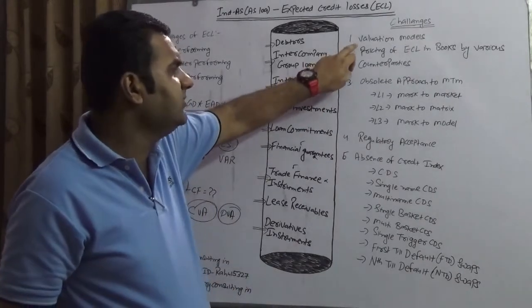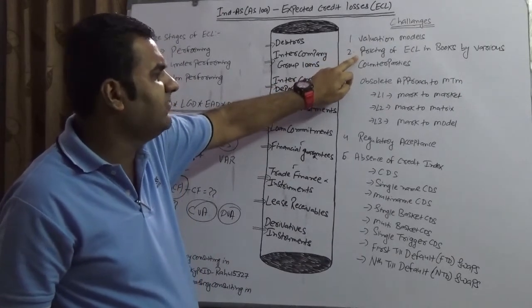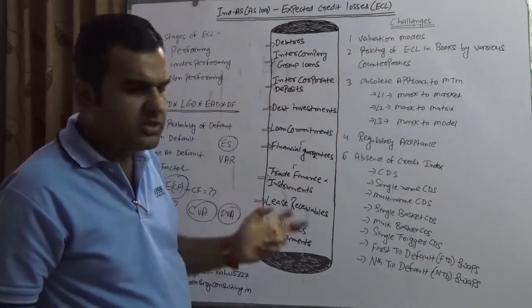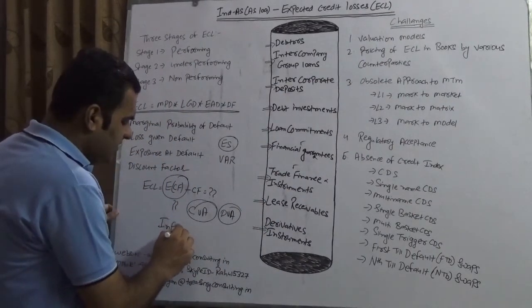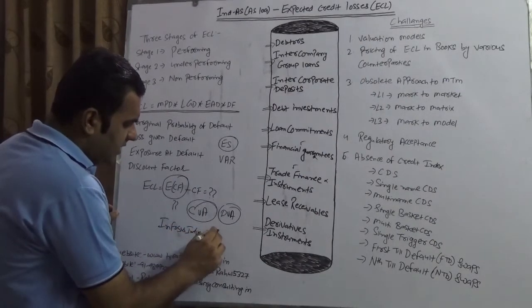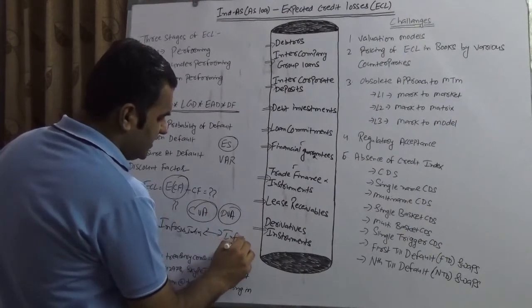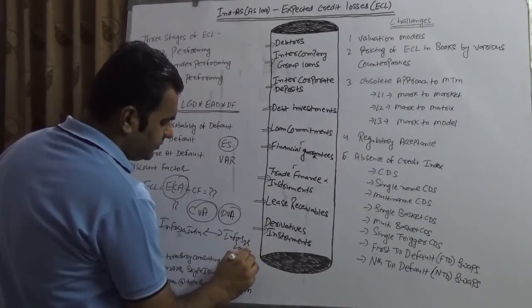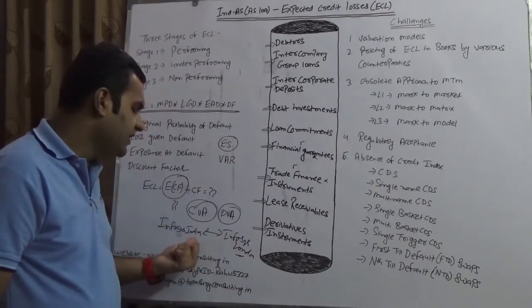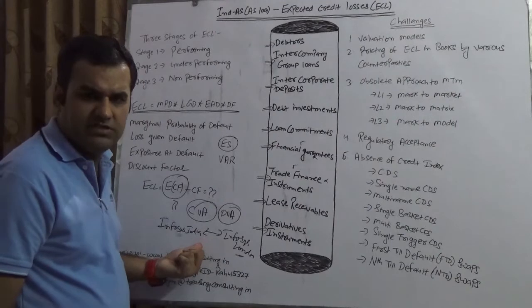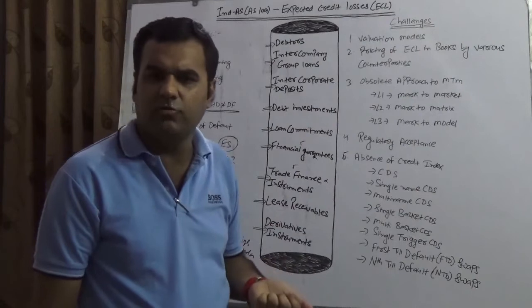Another problem with initial recognition: this country as a whole and the regulator do not accept either. The valuation model is always an issue. Pricing of ECL in the books by various counterparties is always an issue. For example, Infosys India and Infosys London - the way their big four will value ECL will be completely different from how Infosys India will value ECL. Another problem is obsolete approach to MTM, mark to market. IFRS 9, US GAAP 133, INDAS 109.